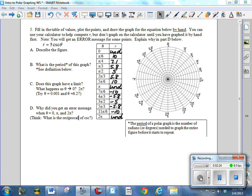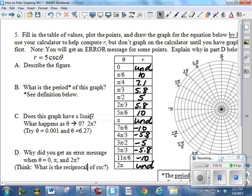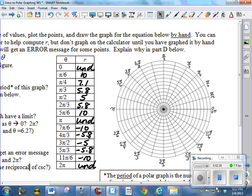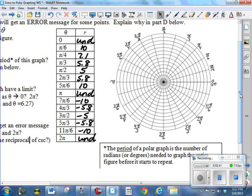Now we have our table of values filled in. We need to start plotting points. I'm going to change my view here and make it a little bit bigger because I have trouble seeing this, honestly, with my eyes. So I'm going to make this bigger so I can see what I'm doing better. So let's think about, obviously, at 0, it's undefined. I can't plot that. At pi over 6, the radius is 10. So I'm going to plot that point right there. At pi over 4, we're at 7.1.